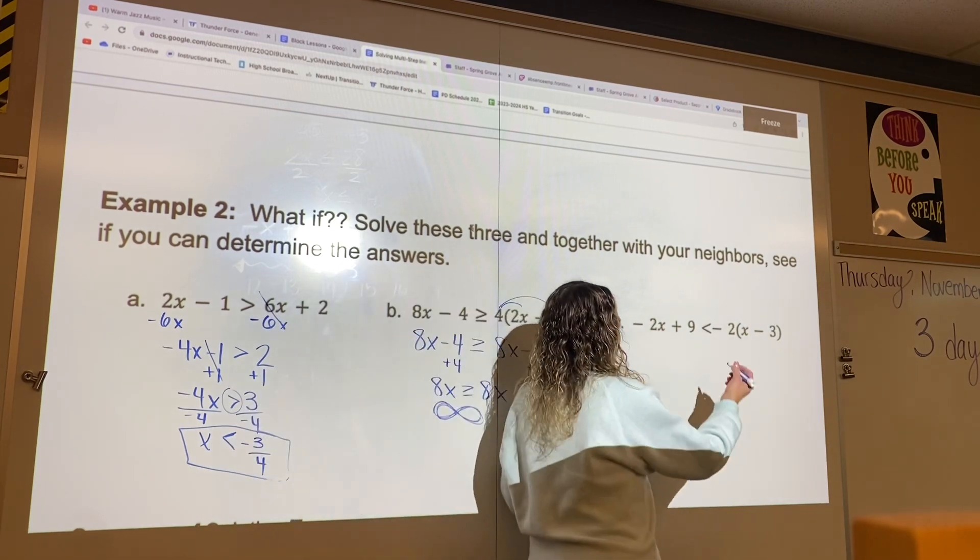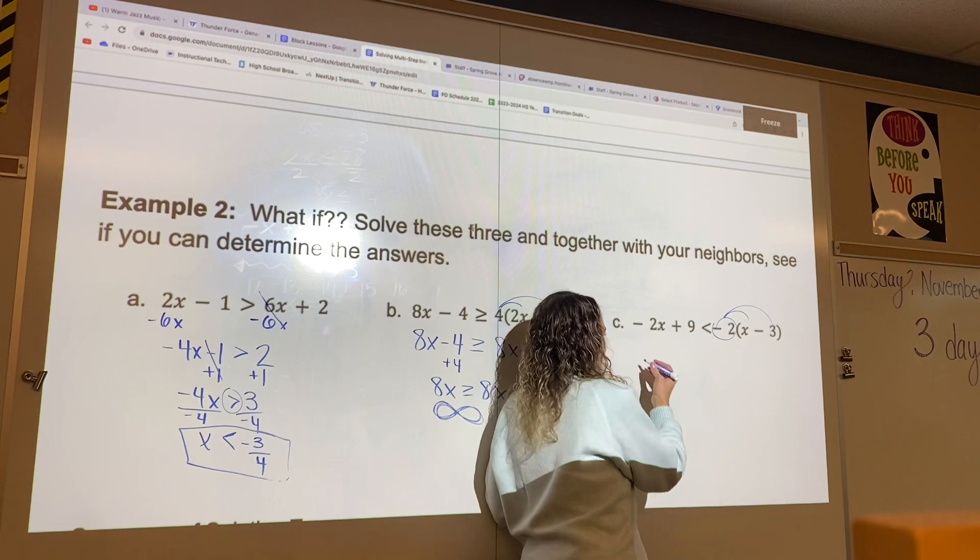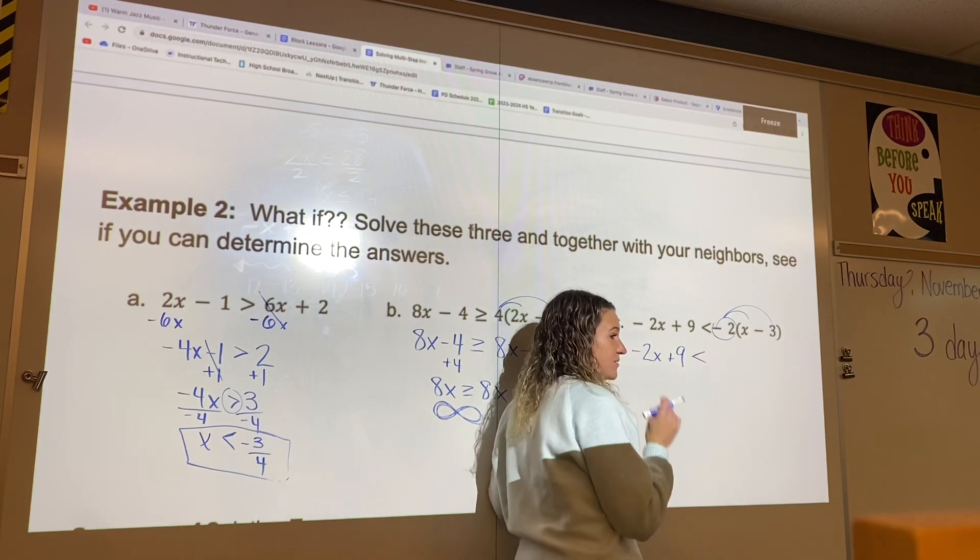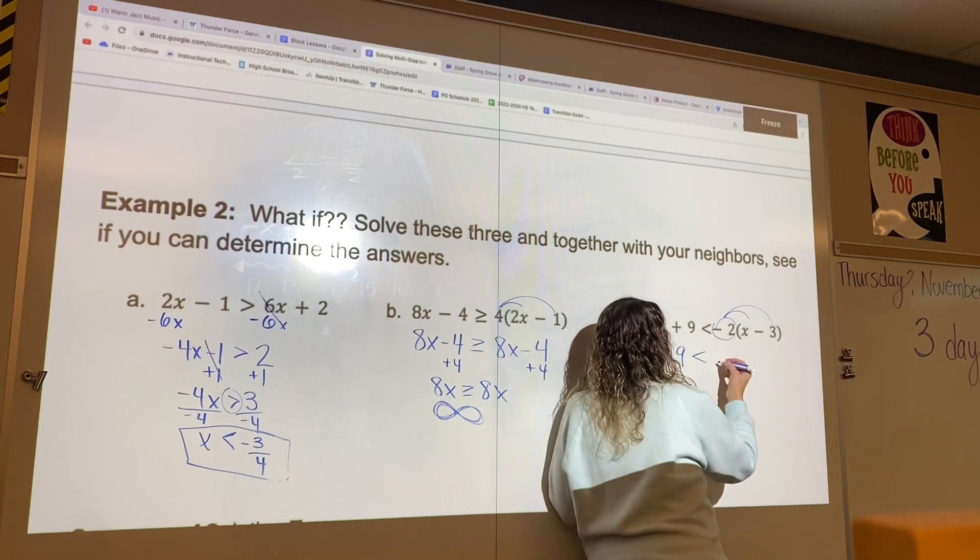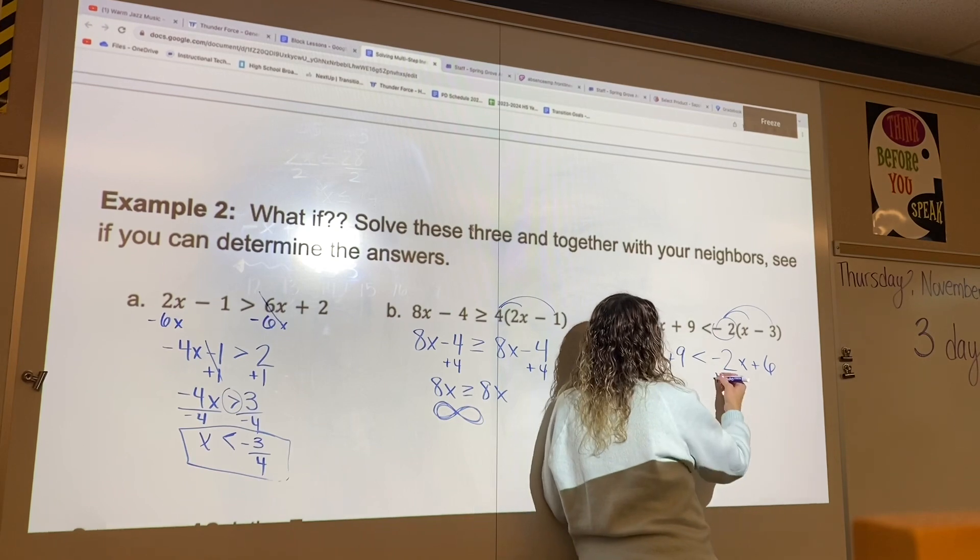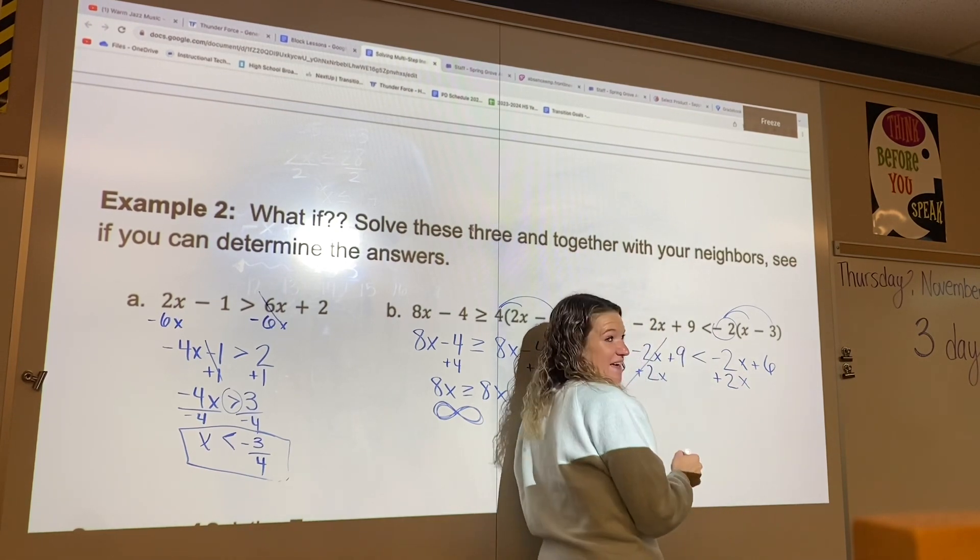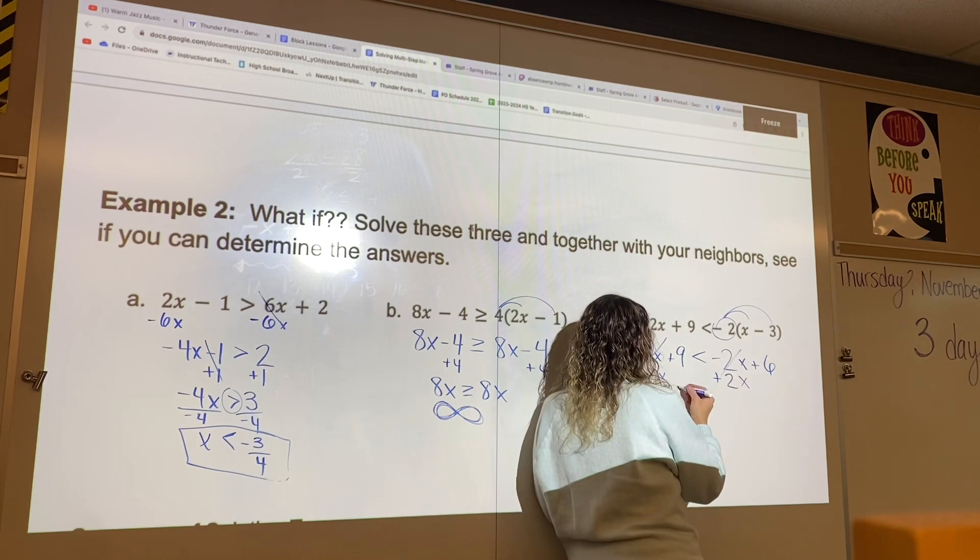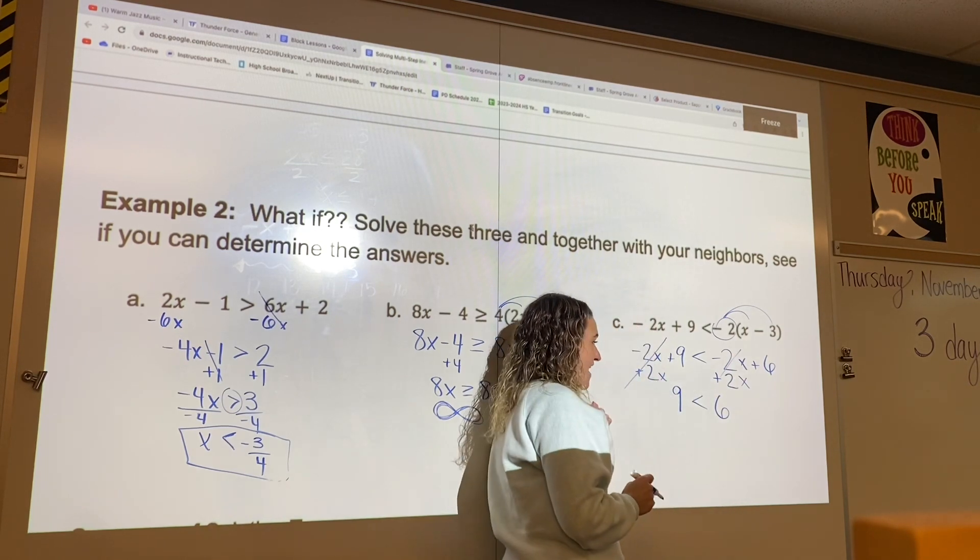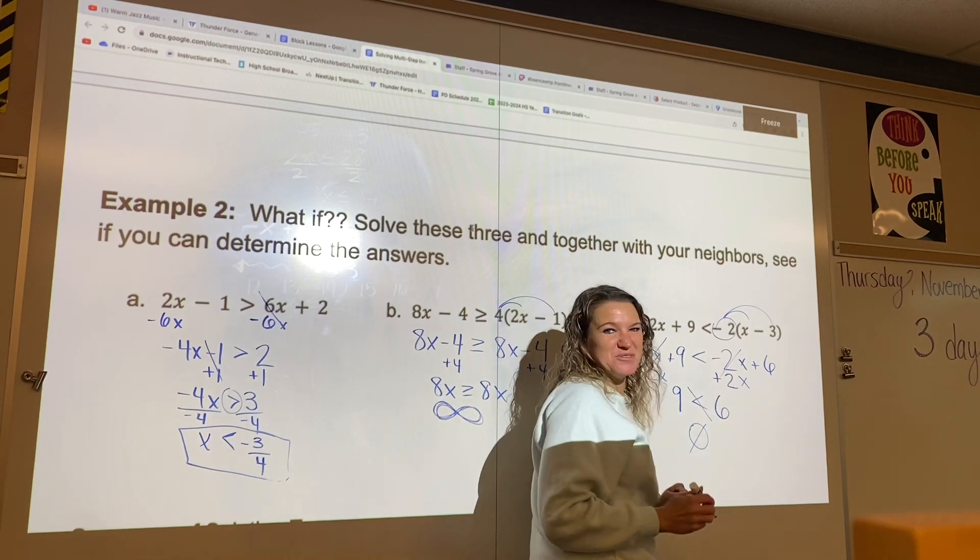Last one. Let's go ahead and distribute our negative 2 here. So we have negative 2x plus 9 on the left. Bring down my inequality symbol, which is less than. Then I have negative 2x plus 6. I'm going to go ahead and add my 2x to both sides. Those are going to cancel just like they did in the last one. So we have 9, which is less than 6. That is not a true statement, which means no solution.